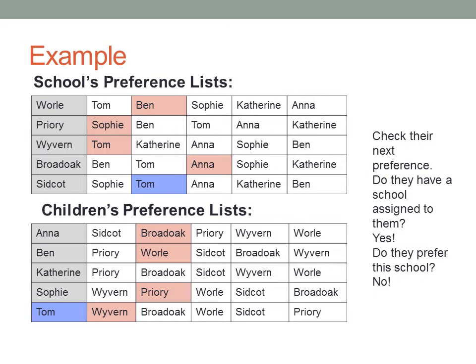Sidcott's next preference is Tom. Tom is already assigned to Wyvern, so we check if he prefers Sidcott. He doesn't, so we move on to their next preference. Their next preference is Anna. Anna is already assigned to Broad Oak, but when checking if she prefers Sidcott, we find she does. So we unassign Anna from Broad Oak and assign her to Sidcott.